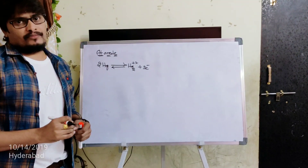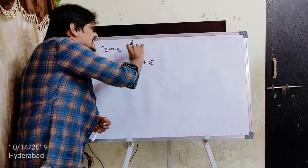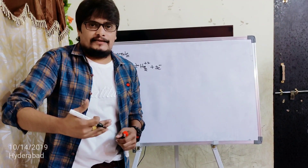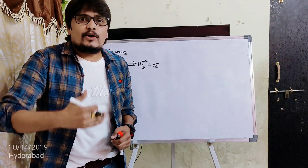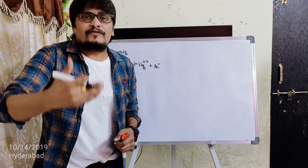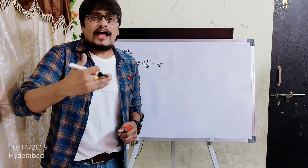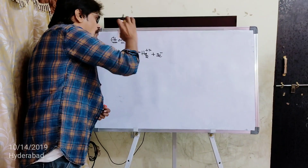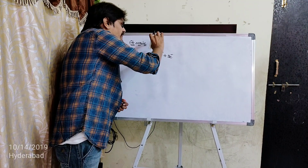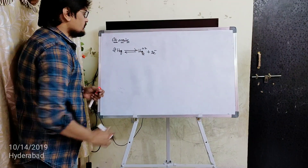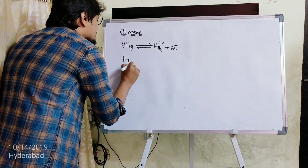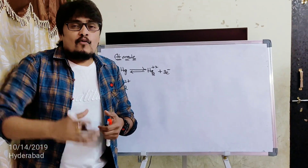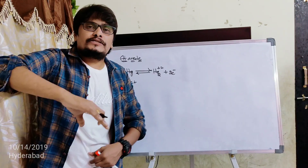Now, what is Hg2²⁺? The plus sign represents that it is a cation. In order to lose its charge and attain stability, it should react with an anion. A cation cannot react with another cation; anion cannot react with another anion. The cation reacts with the anion. So the next step after forming Hg2²⁺ at the anode is the stabilization of this particular cation.